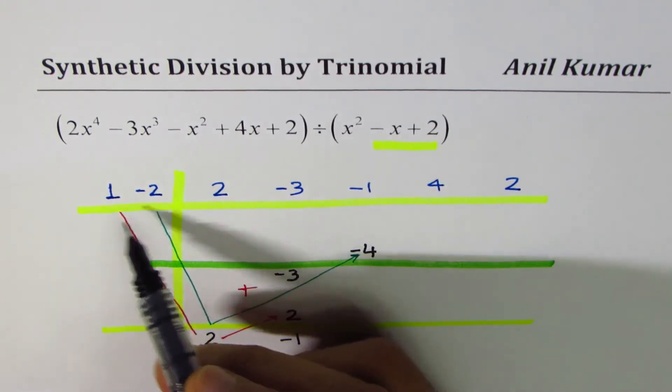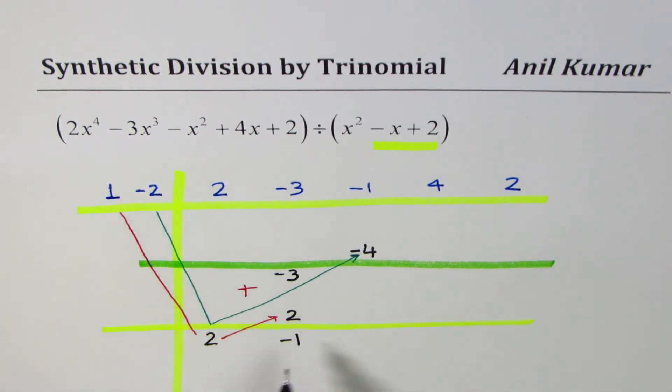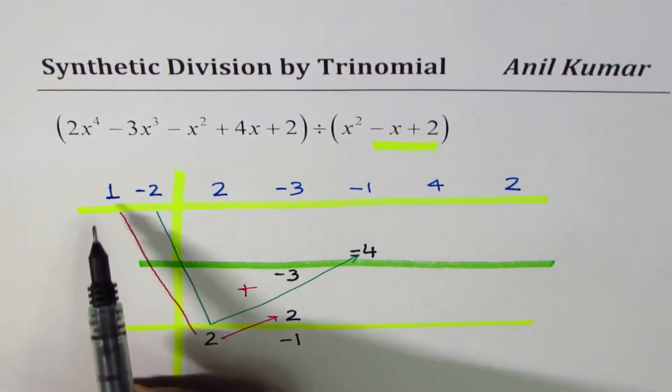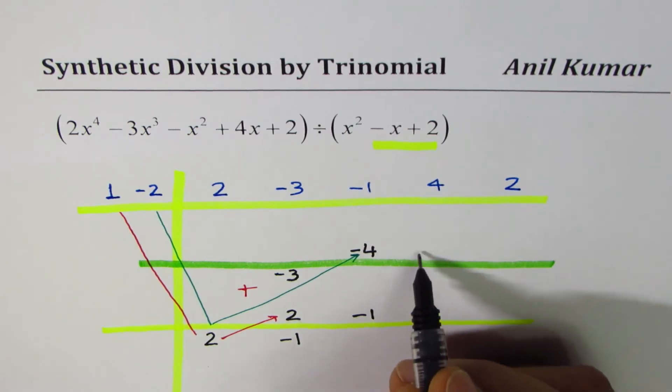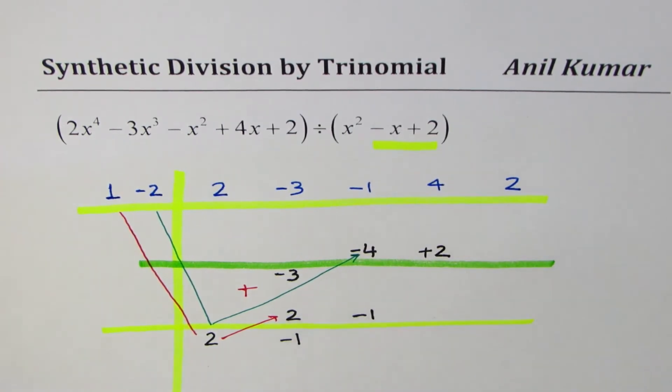We continue the same process. Multiply minus 1 with both. 1 times minus 1 is minus 1, place it here. What is minus 2 times minus 1? It is plus 2. Place it on the other side.